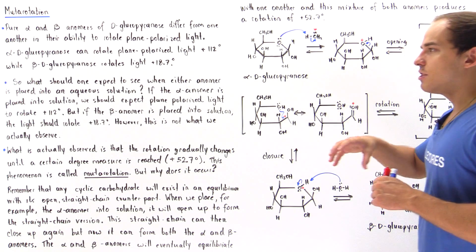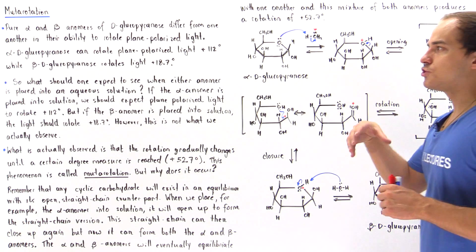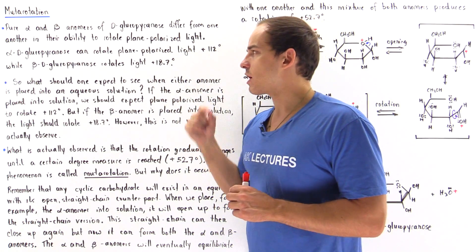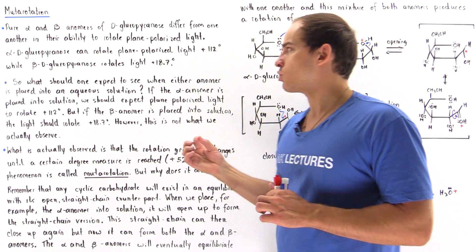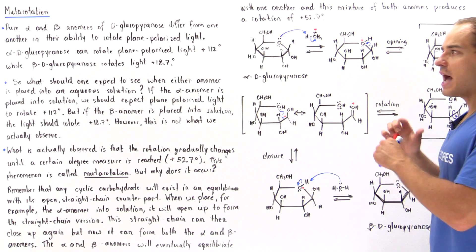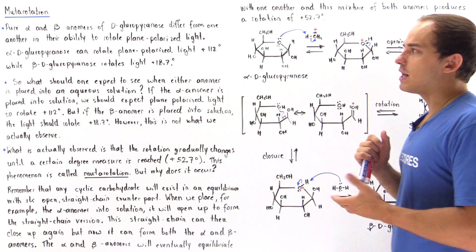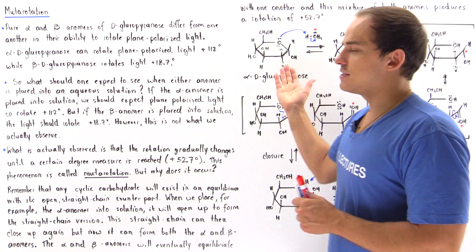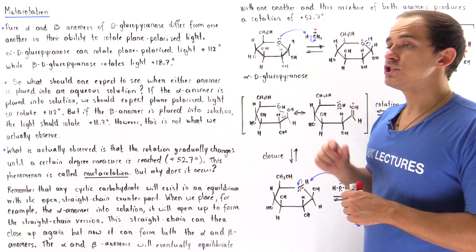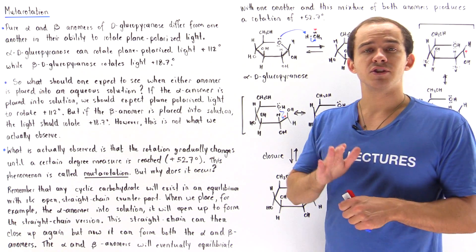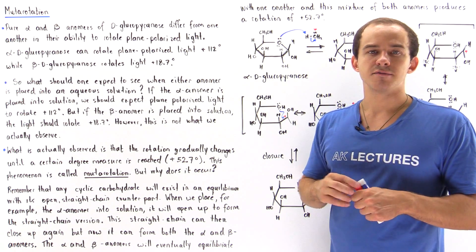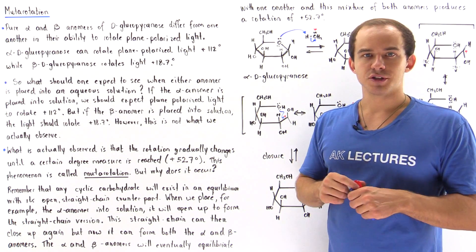Mutarotation is the gradual change in rotation of plane polarized light until we reach that certain equilibrium quantity — in this case, 52.7 degrees in the clockwise positive direction.